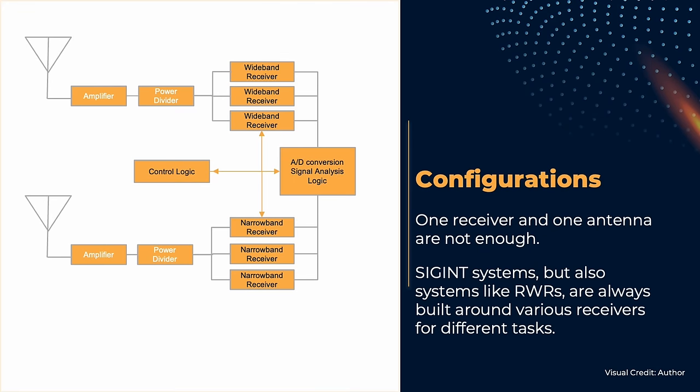So conceptually, a SIGINT system is made of a few wideband receivers that are used to intercept the signals, sharing one or more antennas, and a few narrowband receivers that are tuned on the signals passed down by the wideband receivers, coupled with the hardware to execute the analysis.